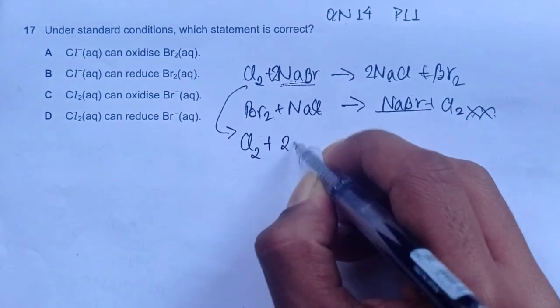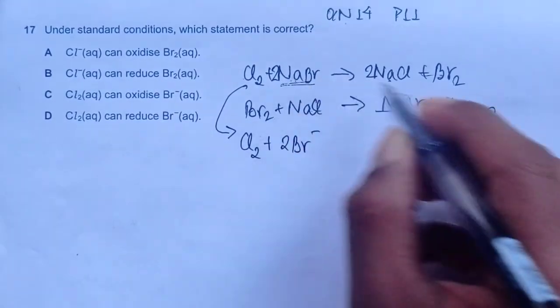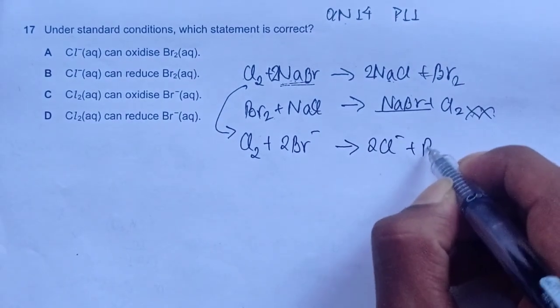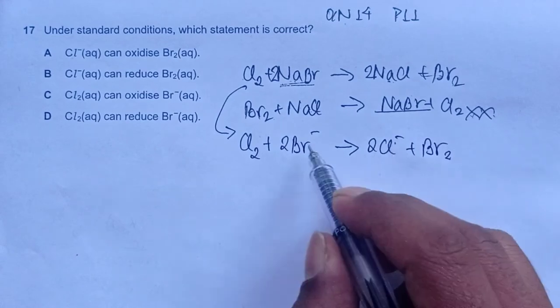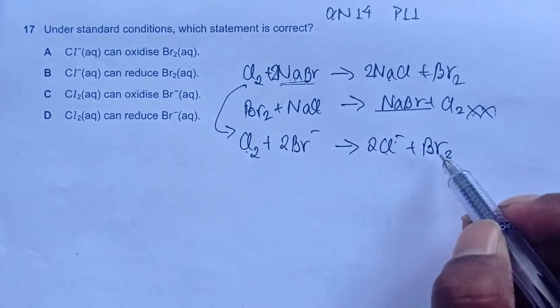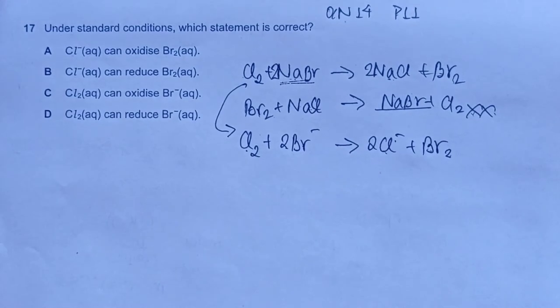So we could just have Cl2 plus 2 Br minus, removing sodium from both of these, gives 2 Cl minus plus Br2 which is the same. We have minus 2 charge here, minus 2 charge here and chlorine, 2 chlorine, 2 bromine, 2 bromine. Products and reactants balance, charge balance. So this equation is correct.